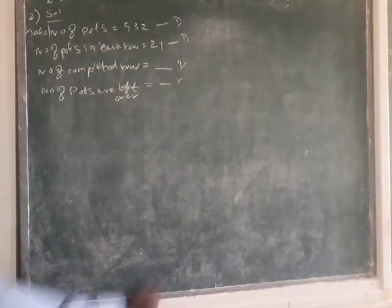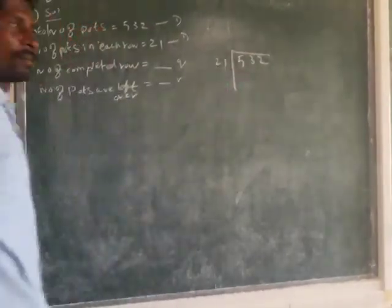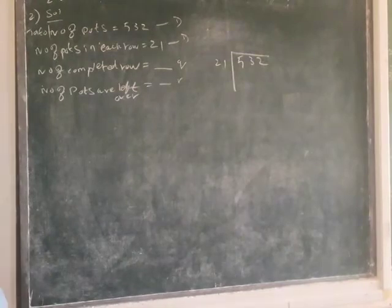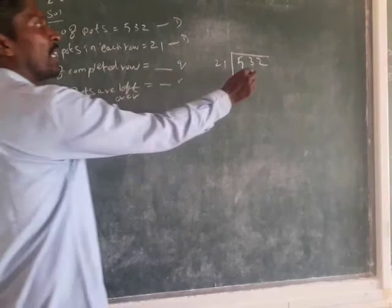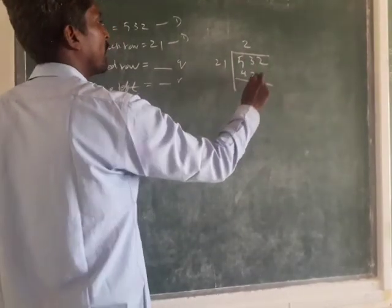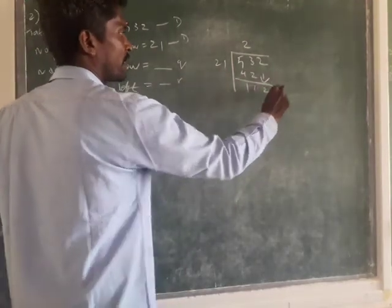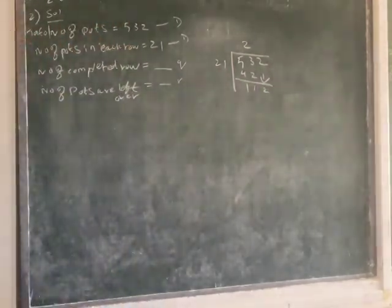Take 532 and divide by 21. In 53, how many times is it possible? Two times possible: 42. Then we have remaining 11. Write down the next number. In 112, five times possible: 1, 5, 7, 5, 2, 5, 7.